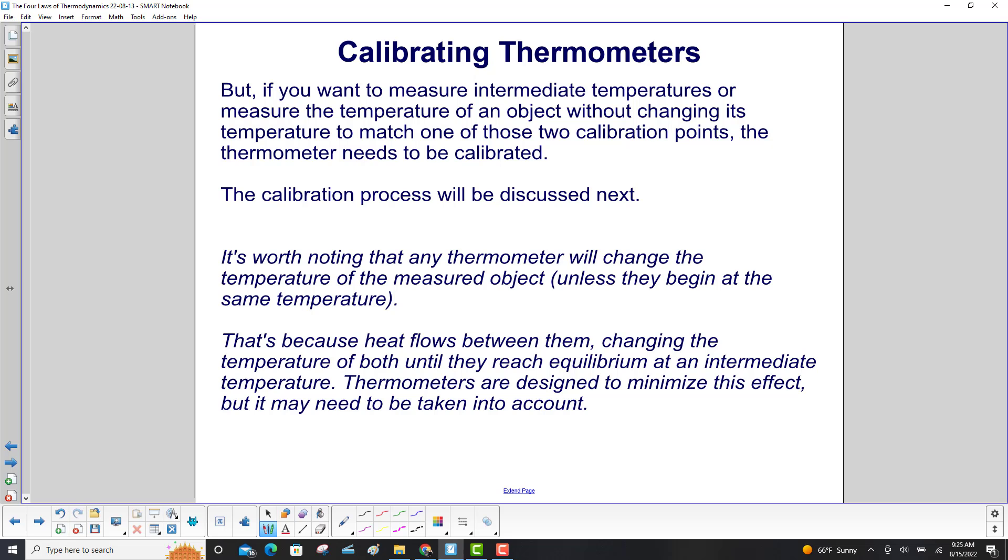It's worth noting that any thermometer will change the temperature of the measured object unless they begin at the same temperature. That's because heat flows between them, changing the temperature of both until they reach equilibrium at an intermediate temperature. Thermometers are designed to minimize this effect, but it may need to be taken into account.